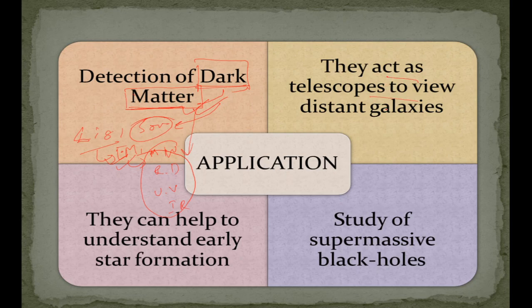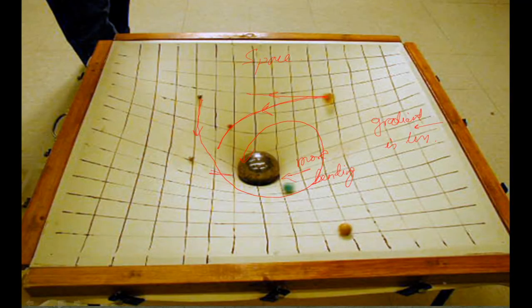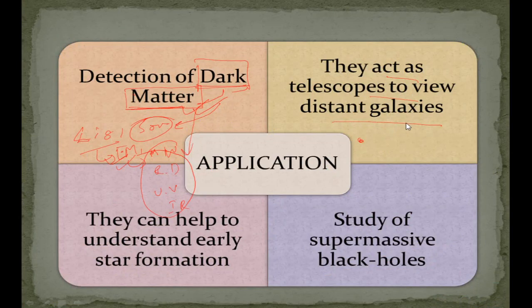It acts as telescope to view distant galaxy. I explained how this galaxy here was visible despite a massive object being here because light is being bent and reaching this observer. That is how we can see distant galaxies.